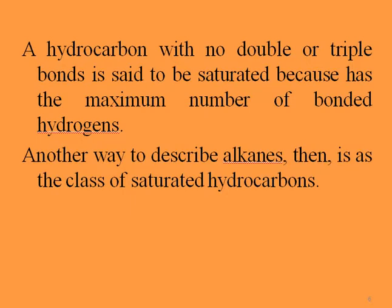A hydrocarbon with no double or triple bond is said to be saturated, because it has the maximum number of bonded hydrogens. When we have all single bonds, we call it a saturated organic compound or saturated hydrocarbon — this is another way to describe alkanes. Organic compounds that have double bonds, triple bonds, or alternating double bonds are called unsaturated organic compounds or unsaturated hydrocarbons.